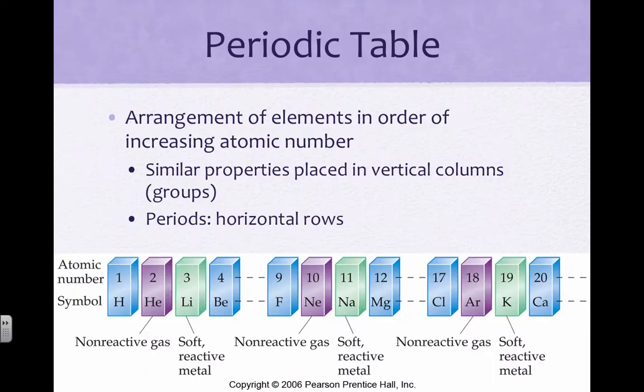The periodic table is an arrangement of all the elements put together, created as more became known about the particles and structure. The modern table is based upon increasing atomic number.